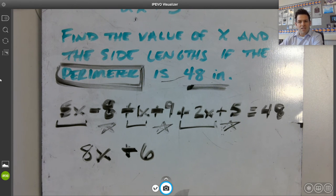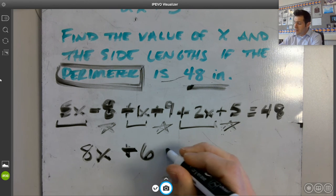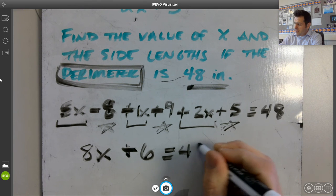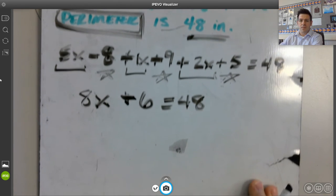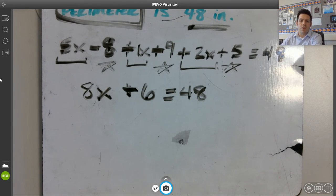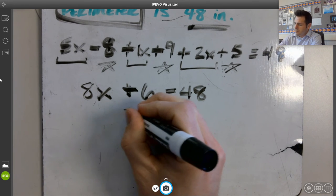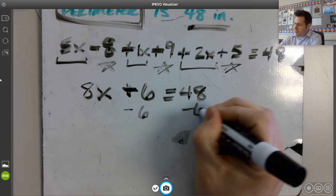So, I have 8x plus 6 when I combine like terms on the left side there. That's equal to 48. Now, I have a two-step equation that we can do our inverse operations for. We'll go ahead and subtract 6 from both sides.